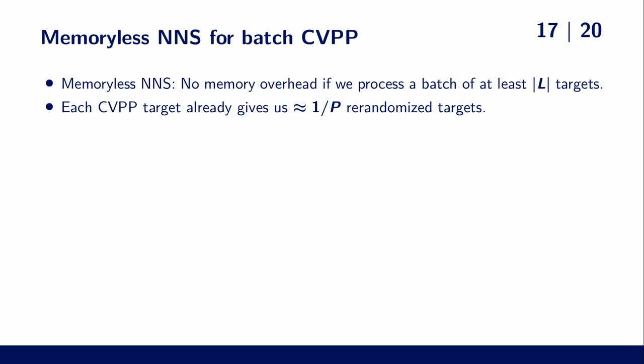Note however that each CVP target already gives us 1 over the success probability re-randomized targets. Therefore, the necessary number of targets to apply this technique can be much lower, even as low as 1.